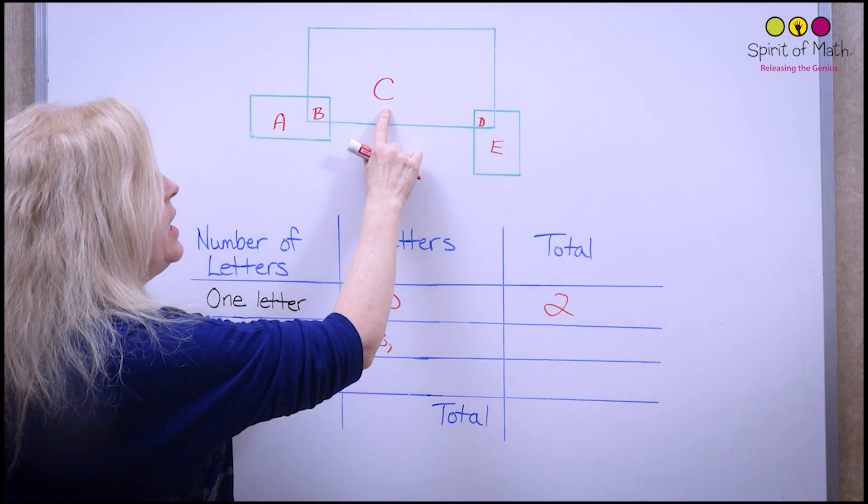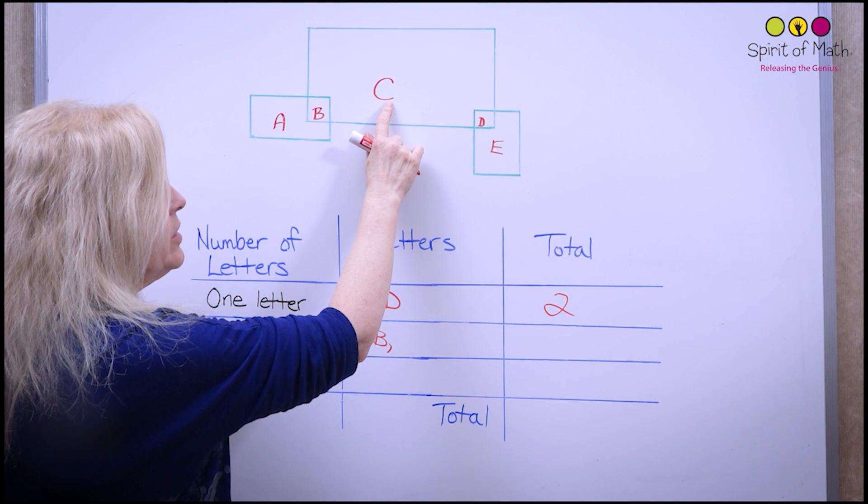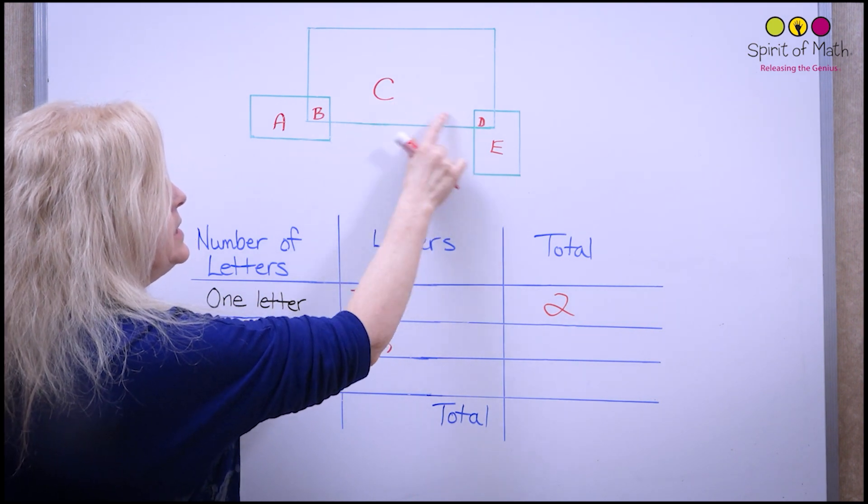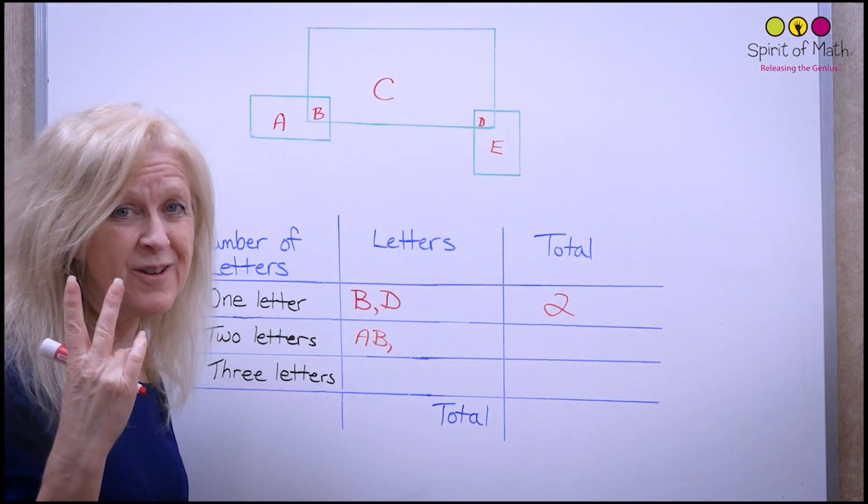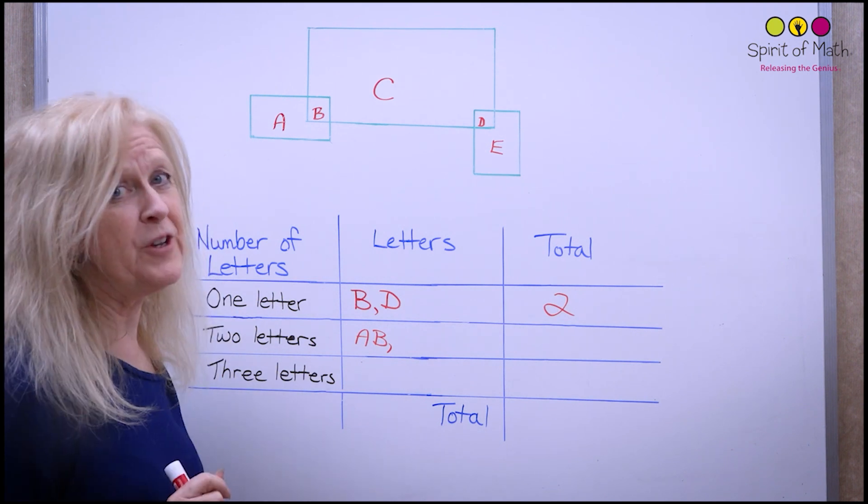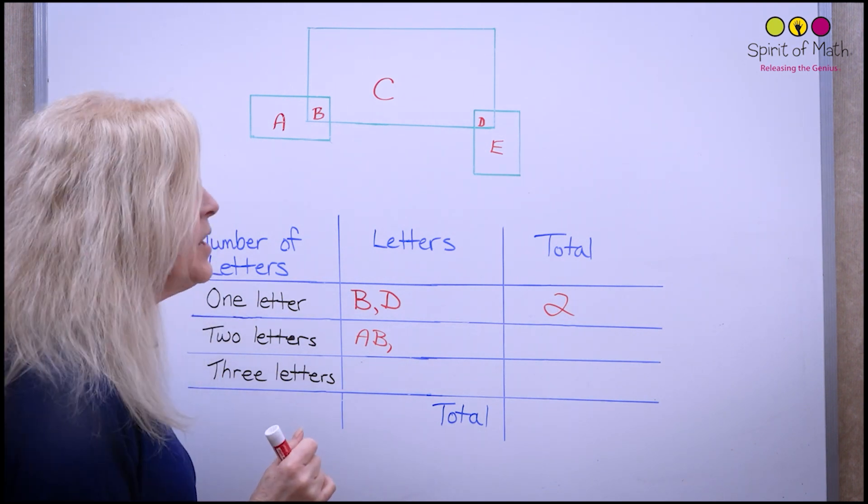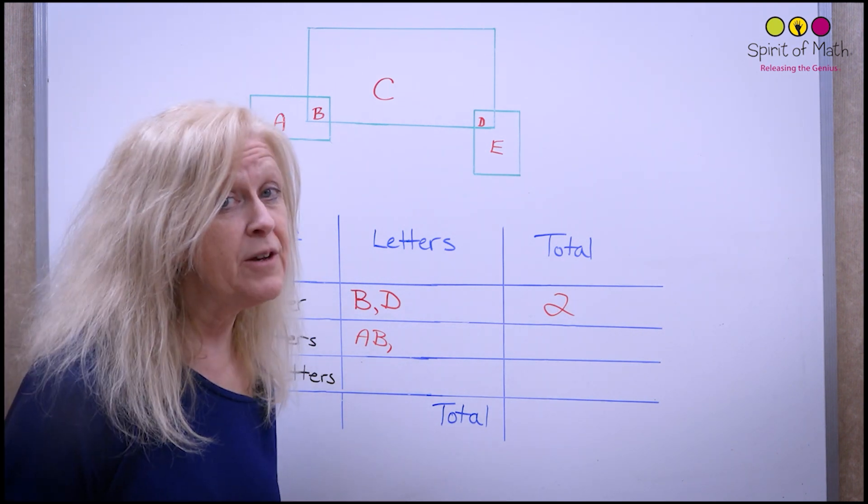Now you go to the C. And you've already done BC. So now you go CD. Well, is CD a two letter rectangle? You have to figure that one out and then see if there's any other two letter rectangles.